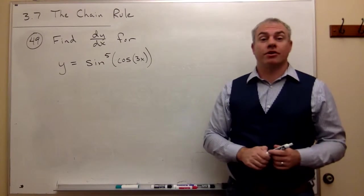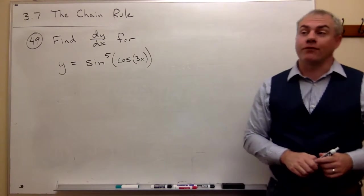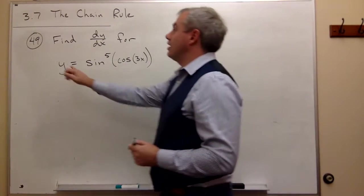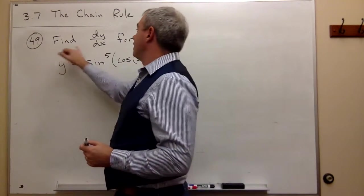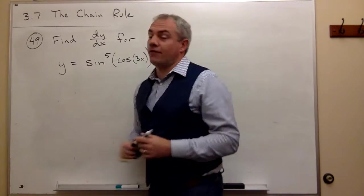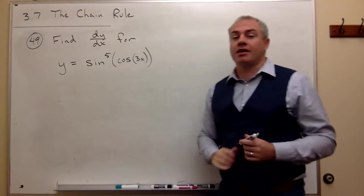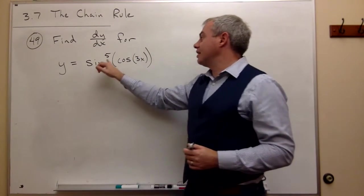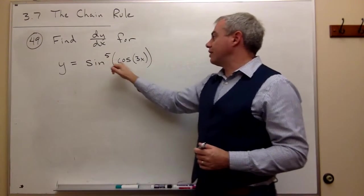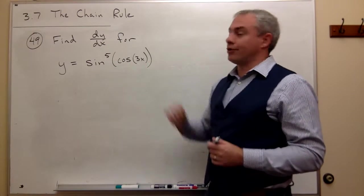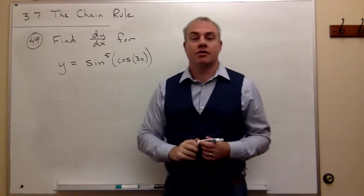All right, now let's look at problem number 49. In number 49, I'd like to find dy/dx for this function y. y is equal to sine to the fifth of cosine of 3x.